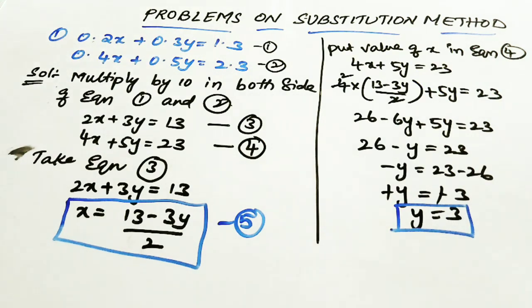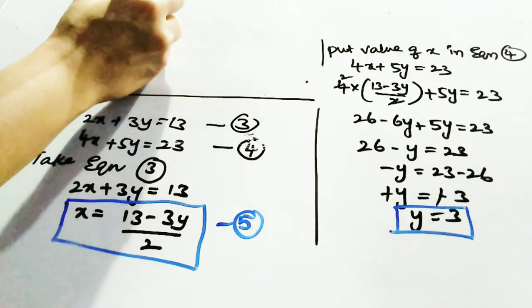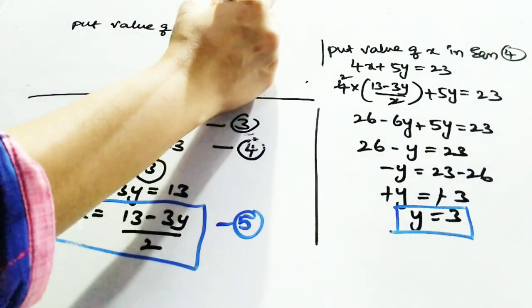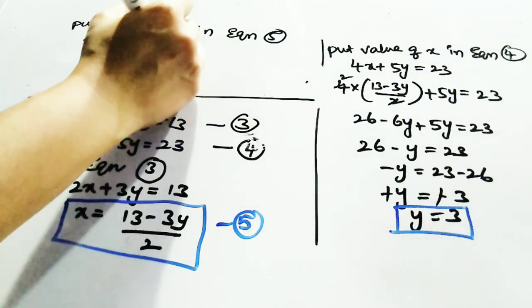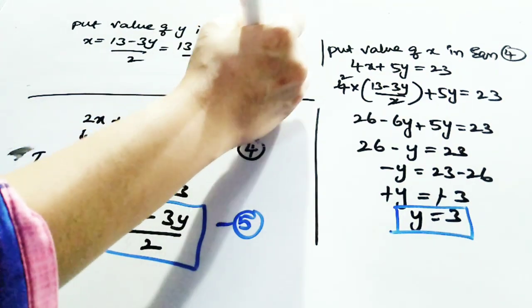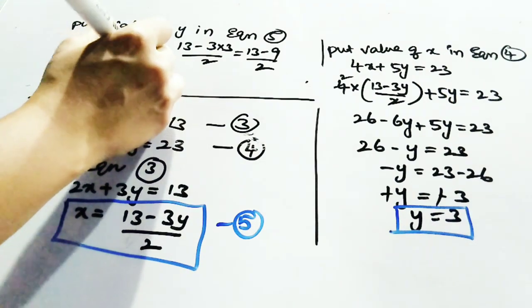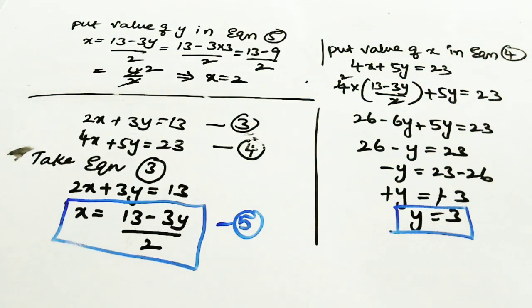y is equal to 3. Now substitute your y value into equation 5. Equation 5 is x equal to 13 minus 3y divided by 2. Putting y equal to 3: x equal to 13 minus 9 divided by 2, which gives 4 divided by 2, so x is equal to 2. The required solution is x equal to 2 and y equal to 3.